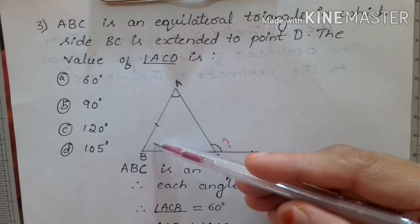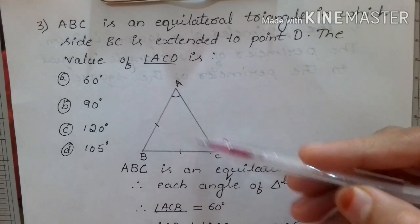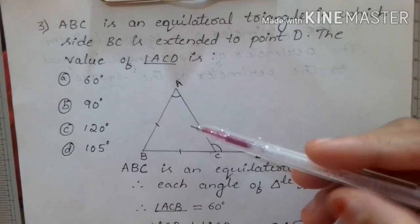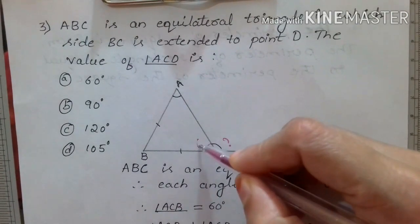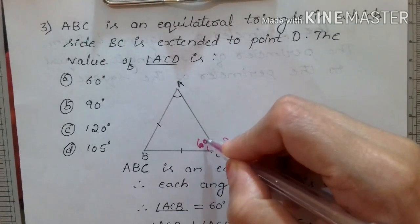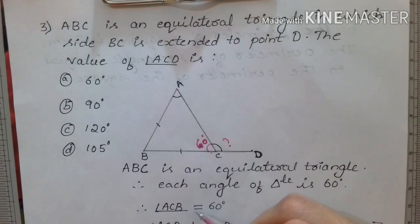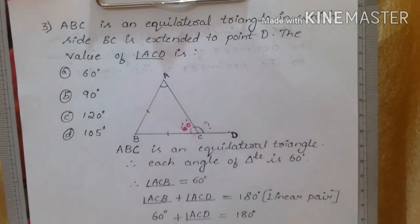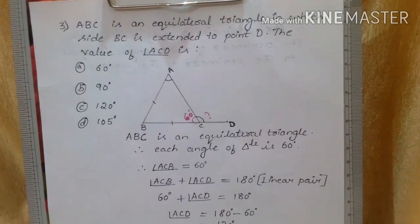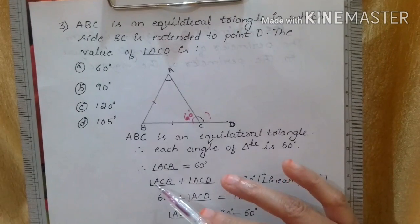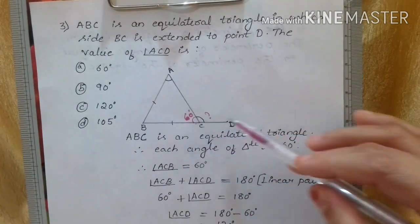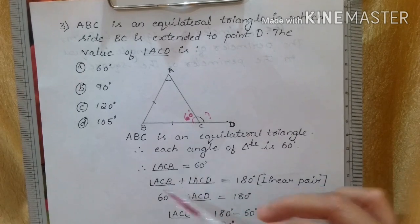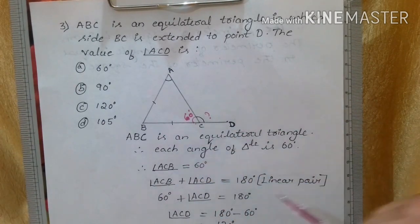We know that the sum of three angles is 180 degrees: 60 + 60 + 60 = 180. So angle ACB is 60 degrees.